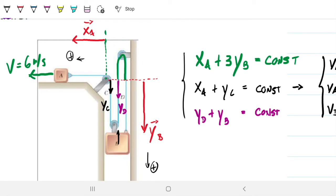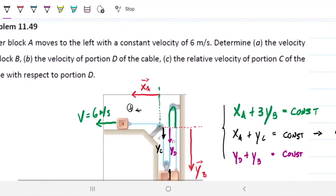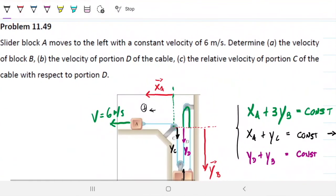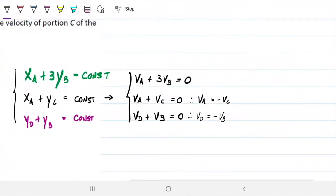Now we can answer the questions. First question, what's the velocity of block B? So that's very straightforward. If the velocity of A is six, so we can use this straight off. Six plus 3VB equals zero. Therefore, VB equals minus two metres per second, right?